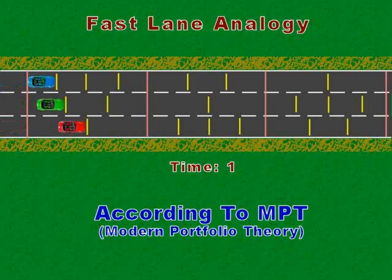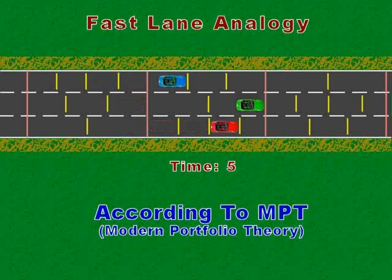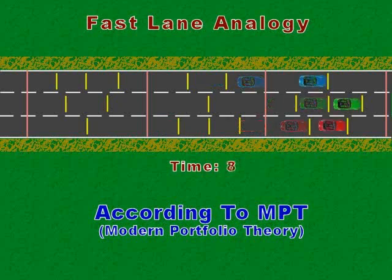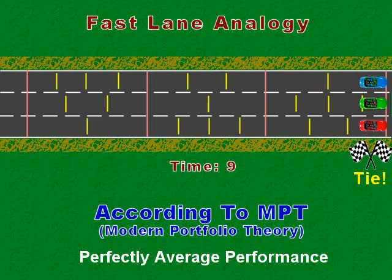Off the line, red takes the initial lead with blue bringing up the rear. Pausing after three intervals, we see the average investment is like the green car. But now green is making a move and taking the lead. Pausing after six intervals, we see the average investment is now like the red car. Finally, here comes blue with his afterburners roaring. After nine exciting intervals, our investments are still performing perfectly average — we averted downside risk, but we also hit no home runs.